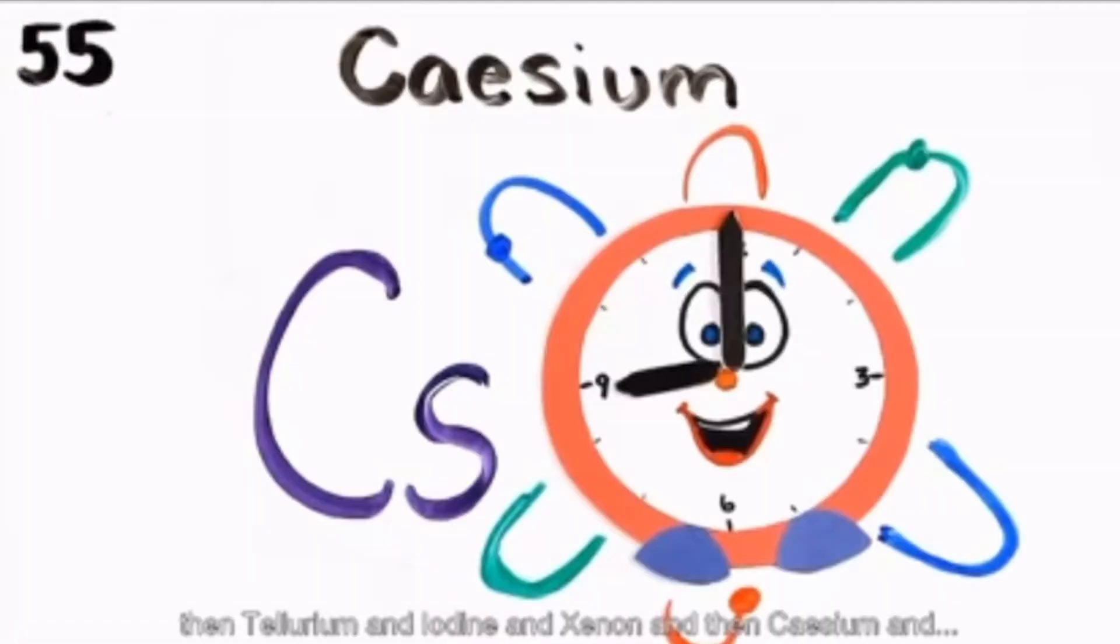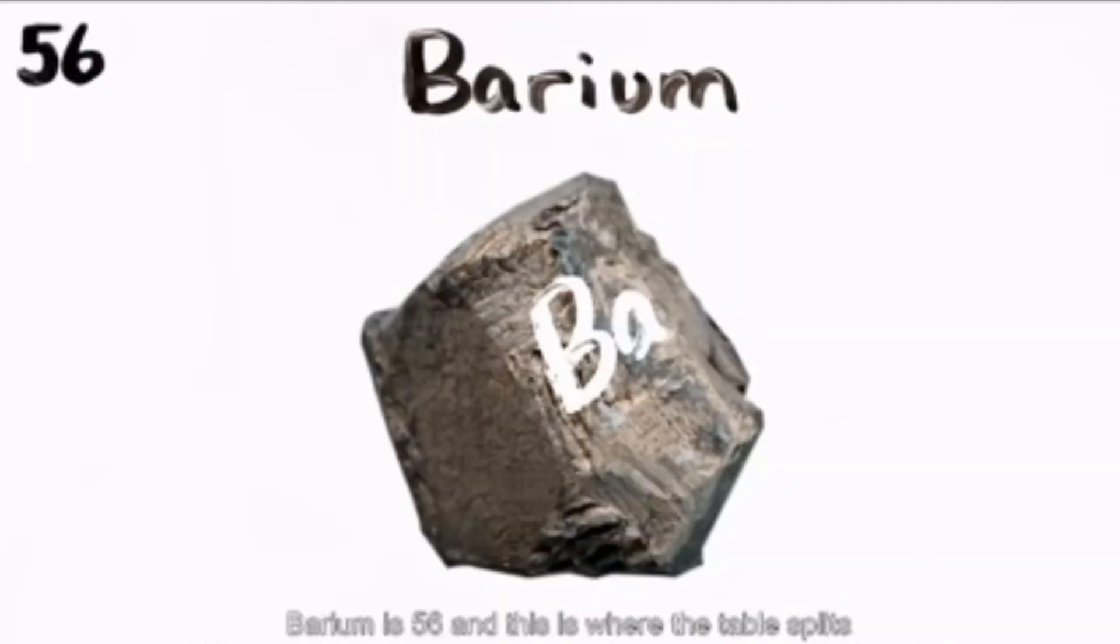And iodine, xenon, and then cesium. Barium is 56, and this is where the table splits.